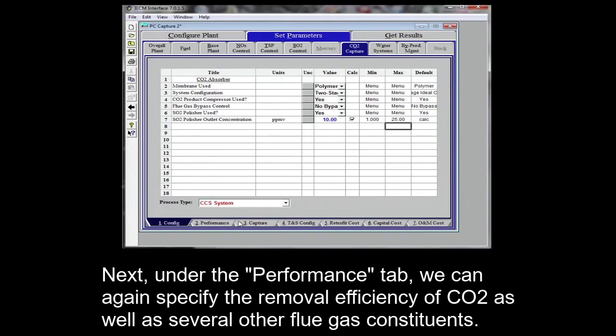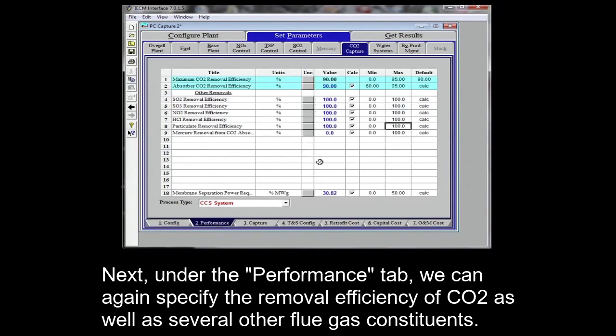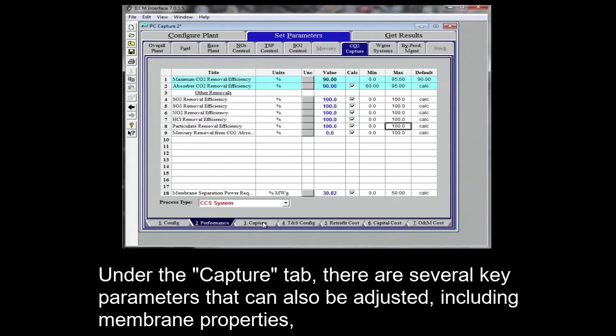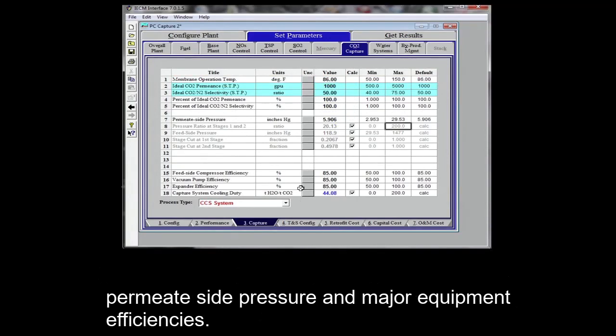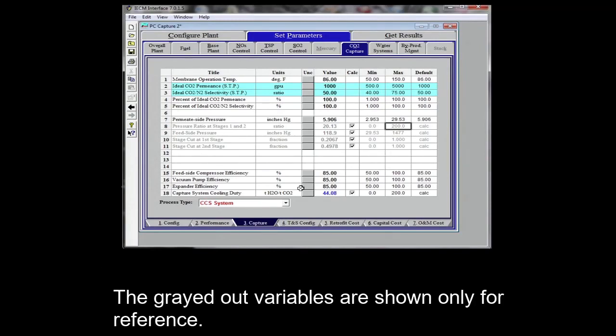Next, under the performance tab, we can again specify the removal efficiency of CO2 as well as several other flue gas constituents. Under the capture tab, there are several key parameters that can also be adjusted, including membrane properties, permeate side pressure, and major equipment efficiencies. The grayed out variables are shown only for reference.